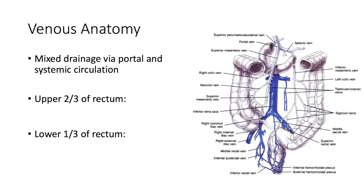The venous anatomy is a little more mixed in terms of portal and systemic drainage. Do you know the means of drainage for the superior two-thirds of the rectum? It goes into the IMV, which then goes into the portal system. On this image, the lighter color represents the portal system; the blue is the iliocaval system. You can see the superior rectal vein drains into the IMV, which goes up and meets the splenic vein before forming the portal vein. So the upper two-thirds or so of the rectum predominantly has portal venous drainage.